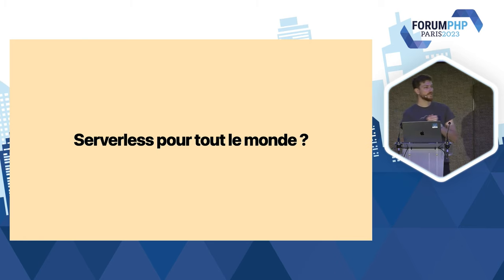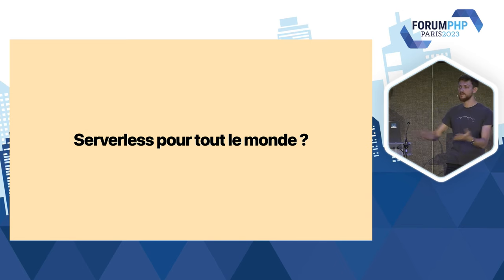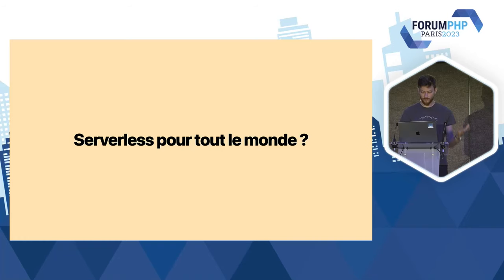Il y a un cas que je n'ai pas mentionné : les cold starts. Les cold starts font aussi que le serverless n'est pas adapté à certains cas d'utilisation — typiquement le temps réel où il est inacceptable qu'une requête fasse plus de 10 ou 100 millisecondes, même si c'est 1% du temps. Ça existe, et dans ce cas-là Lambda ne conviendra pas. Mais dans la majorité des projets, en production on les a 0,5% du temps. Amazon a sorti une optimisation où ils démarrent des instances en avance sans que vous ayez à les payer. On peut aussi payer pour éviter les cold starts. Dans la majorité des applications et des sites web, ce genre de latence en pratique n'est pas du tout un problème.